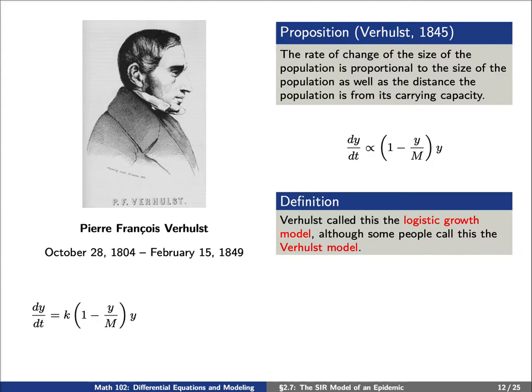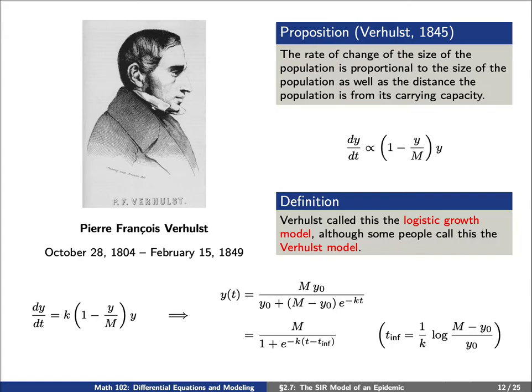Simply put, if we let k be the constant of proportionality, then we can explicitly solve for this population size y(t), and here we've expressed it in two different ways, the one at the bottom in terms of the inflection at time t_inf. Of course, this can all be generalized.